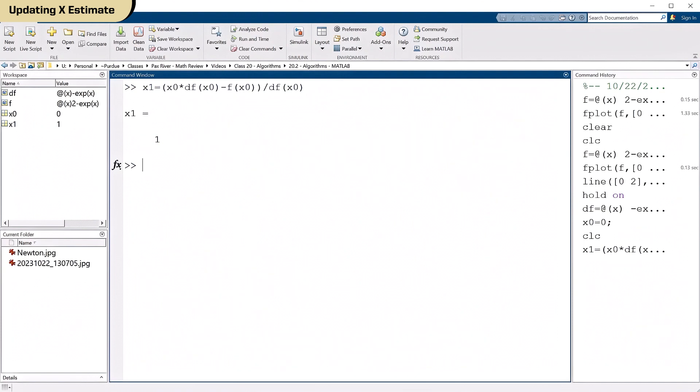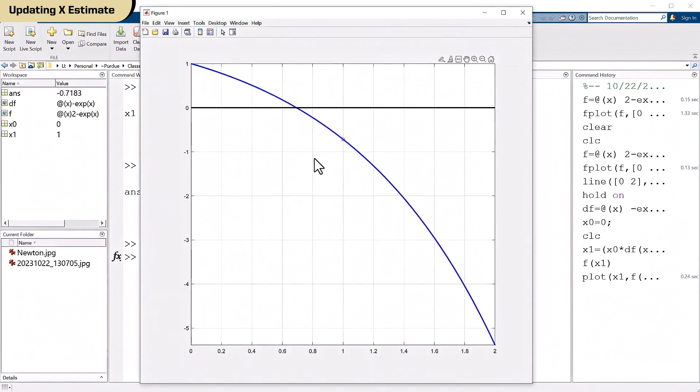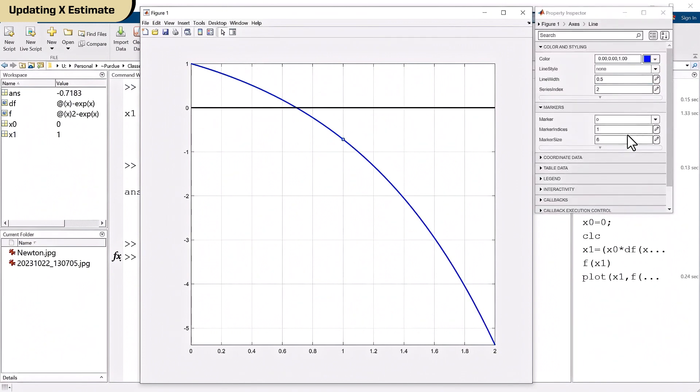So just to check here, what is that? Minus 0.7183. That means I've crossed the x-axis. I'm actually past the root now. So since I have these, let's do this. Let's plot x1, f of x1. And let's make that a blue circle. Let's make sure it's on our plot. It's right there. It's kind of hard to see. I'm going to make that bigger. And let's see, marker size. Let's make that about 12.